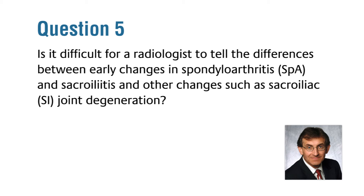Usually it is possible to distinguish spondylitis on MRI because spondylitis presents early in life — in the twenties and thirties — and in that age group you don't see a lot of degenerative changes in the sacroiliac joints. Where it can be difficult to distinguish between inflammation and degenerative changes is in somebody who presents with spondylitis in their forties, because we do start to see degenerative changes in the forties in the spine as well as the sacroiliac joints.